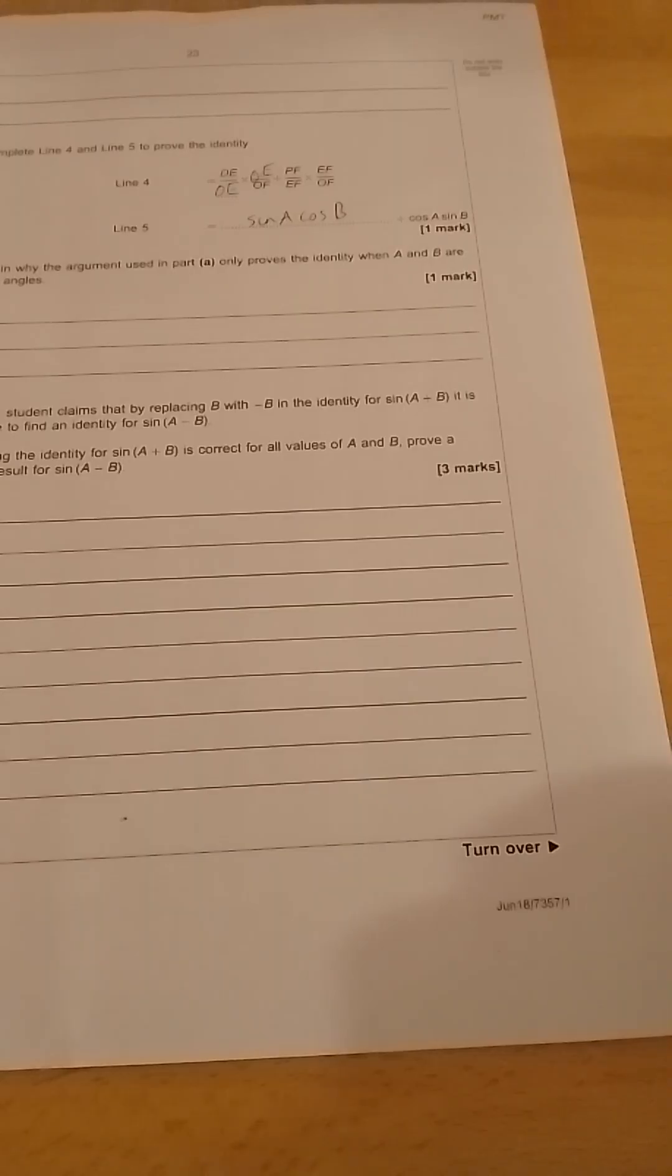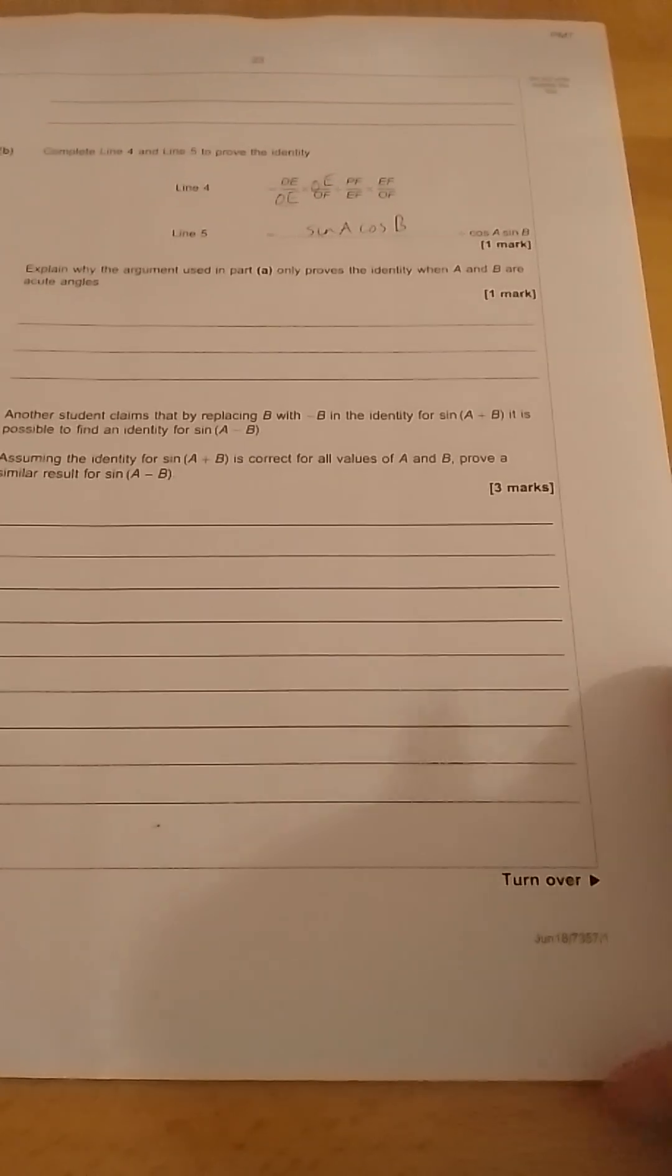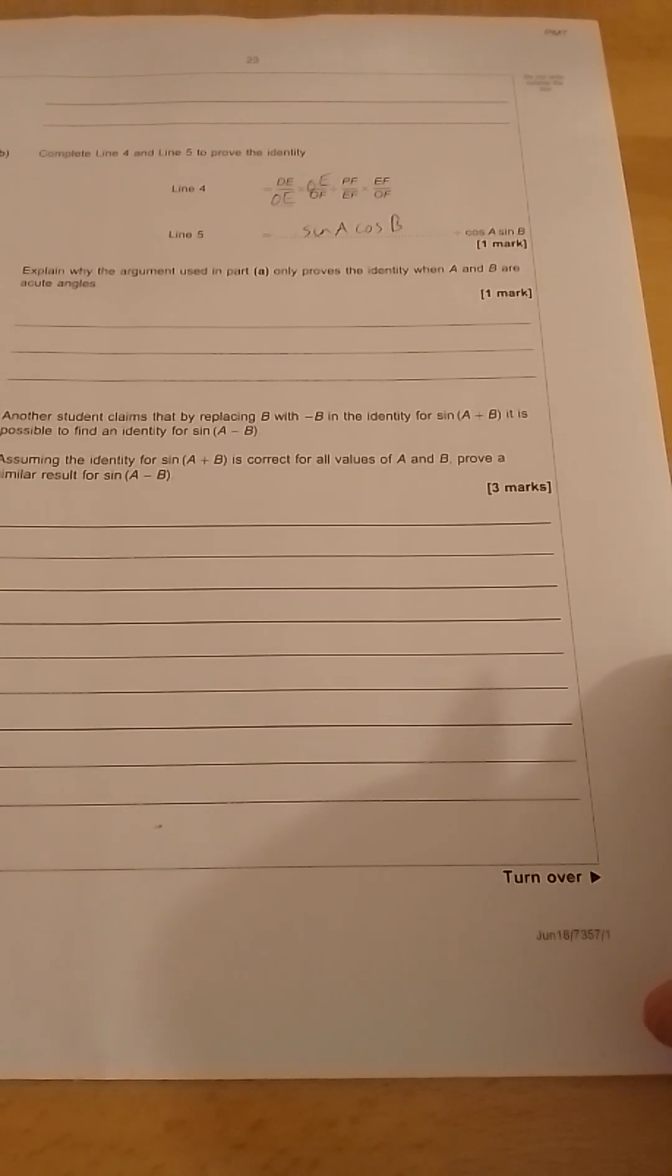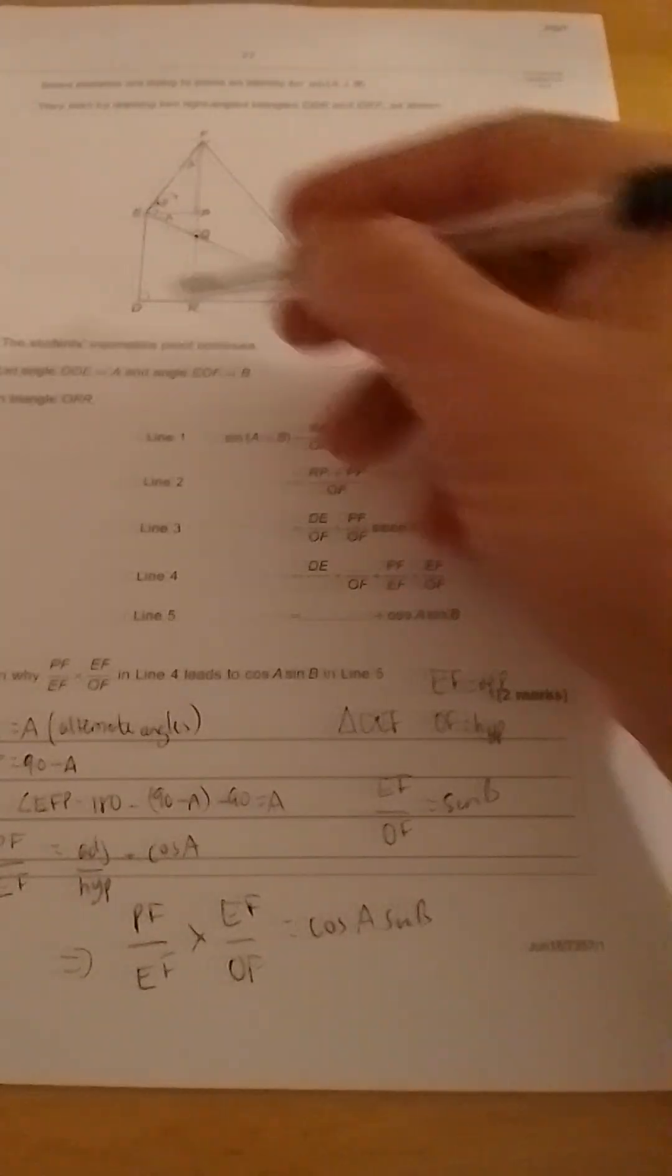Explain why the argument used in part A only improves the identity when A and B are acute angles. In other words, less than 90 degrees. Well, of course, we're using triangles here. So all the angles in the triangle must add up to 180, and one of the angles we always know is a right angle, 90 degrees. So if we go back to the diagram for a moment, we can see if we just look at the original triangles, the triangle ODE.